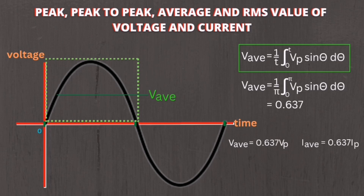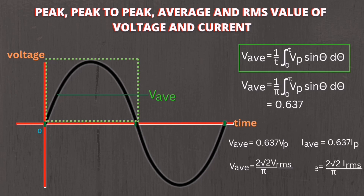Since V-sub-P equals square root of 2 times V-RMS, we have V-average equals 0.637 times square root of 2 times V-RMS, or equivalently V-average equals (2√2 / π) times V-RMS. It follows that I-average equals 0.637 times square root of 2 times I-RMS, or I-average equals (2√2 / π) times I-RMS.